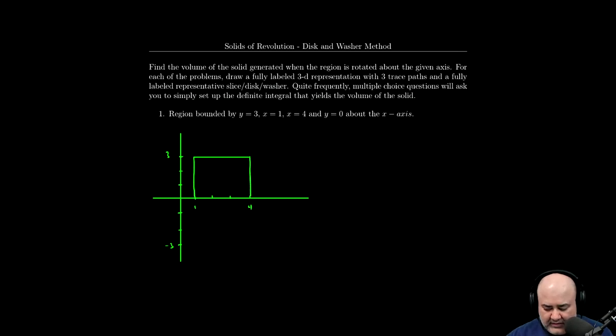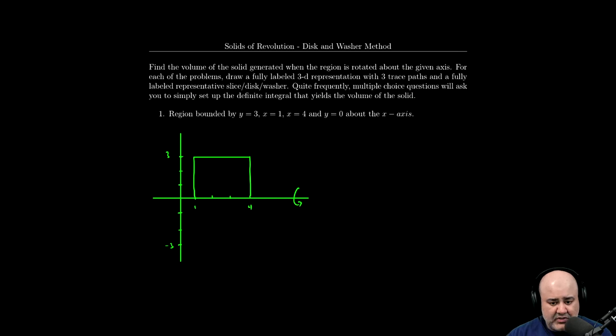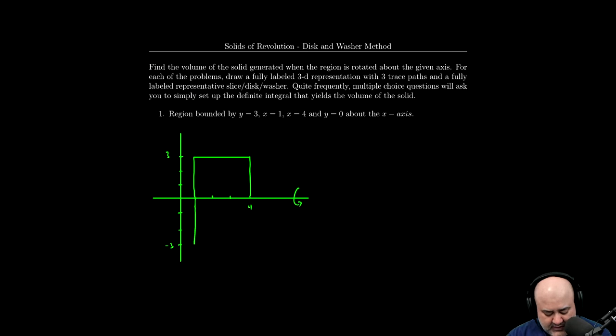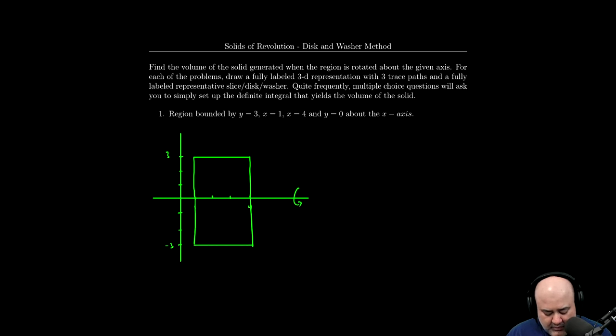First thing you want to do is reflect this region about the x-axis or whatever axis of rotation you have, reflect that region about that axis. So that means that is going to extend to here. That's going to extend to there. And then you have a horizontal line, which is a reflection of the one above.